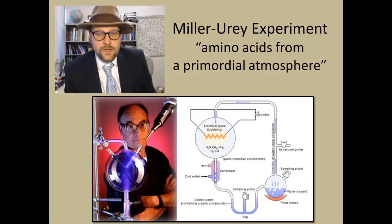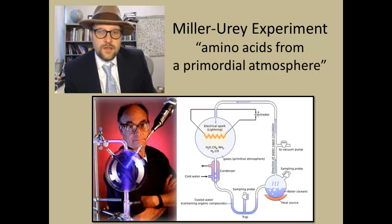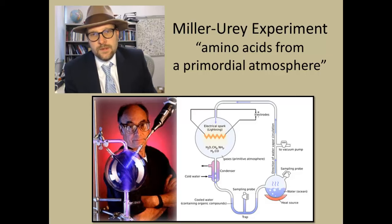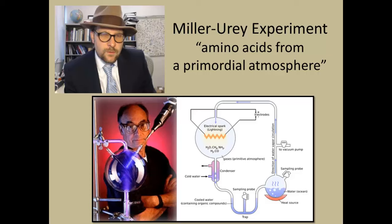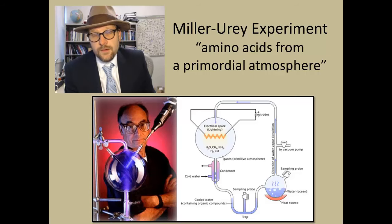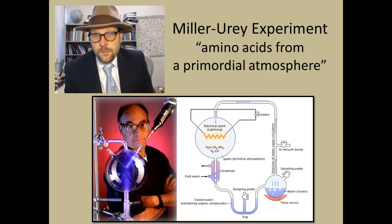Miller created an ocean under a heat source to cause evaporation and cycle water through the system. He added an electrical spark to simulate lightning. In the 1950s through 1980s, many experiments involved taking all those chemical ingredients and seeing what happens. Miller showed that looking at the resulting water, you start to get complicated carbon molecules — amino acids. Amino acids have also been found in meteorites, confirming you can create the building blocks of DNA through a very simple experiment.